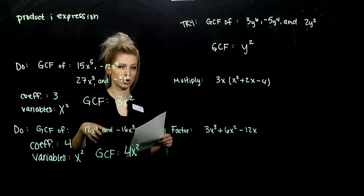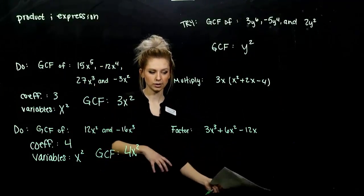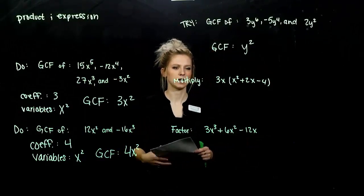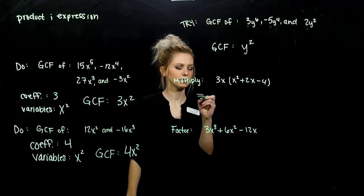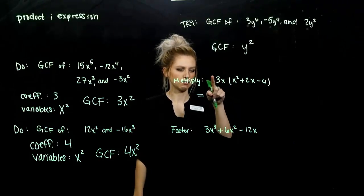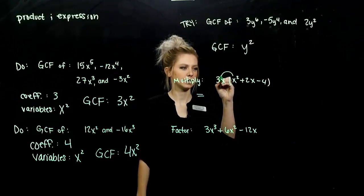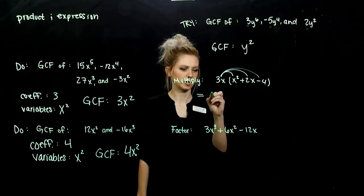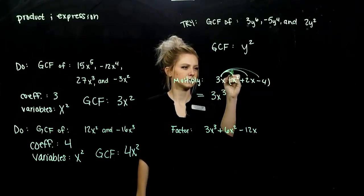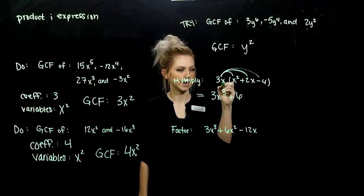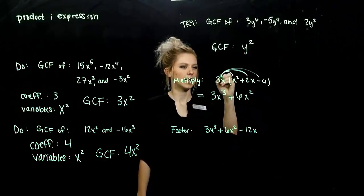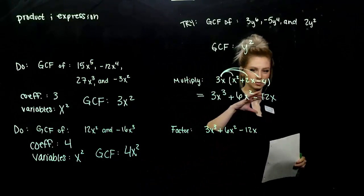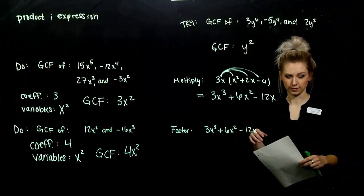Now we can recognize what the greatest common factor is. We'll look at actually factoring it out of a polynomial. But first, we're going to look at these two cases. We know how to do multiplication, so let's hit this one. To get rid of these parentheses, I have to take 3x and distribute it to every single term in this polynomial. 3x times the first term gives me 3x cubed. 3x times 2x: 3 times 2 gives me 6, x times x is x squared. And 3x times negative 4 gives negative 12x.